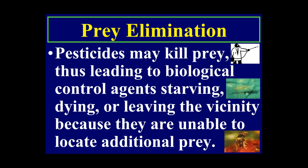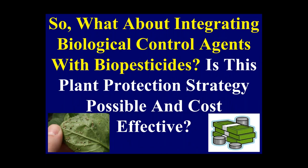The fourth impact is prey elimination. If biological control agents don't have a sufficient number of prey individuals to sustain their populations, they can starve, die, or leave the vicinity. The pesticides may kill the prey, leading to biological control agents starving, dying, or leaving and being unable to locate additional prey.